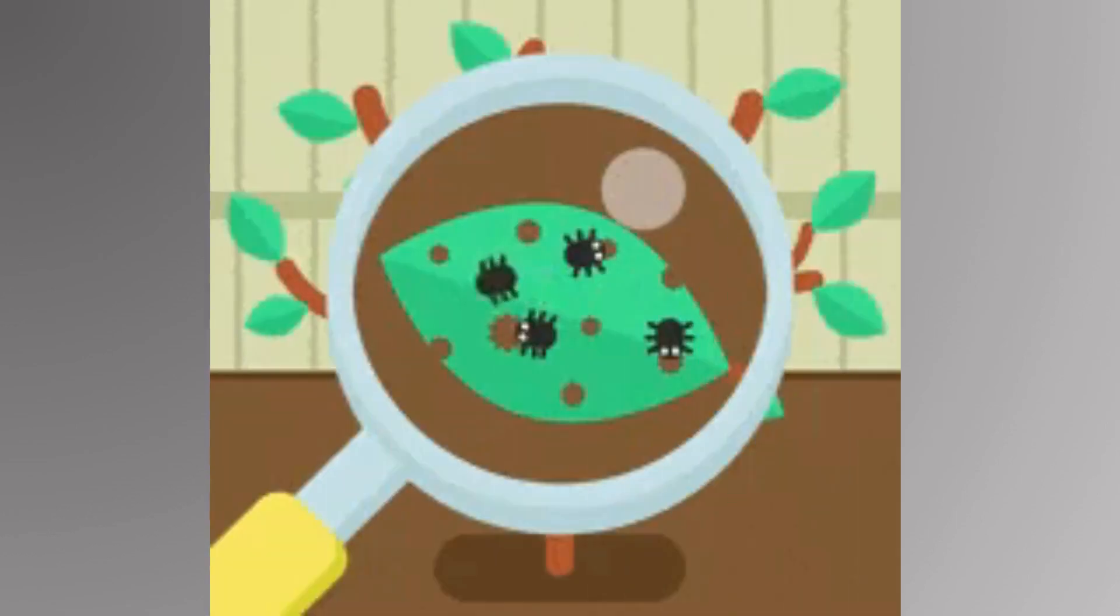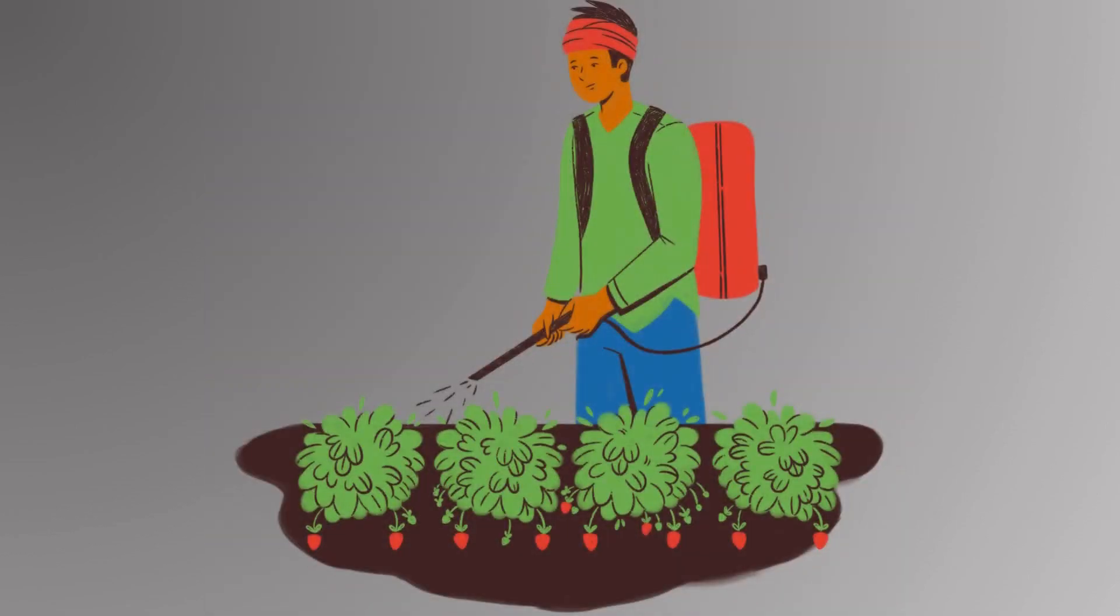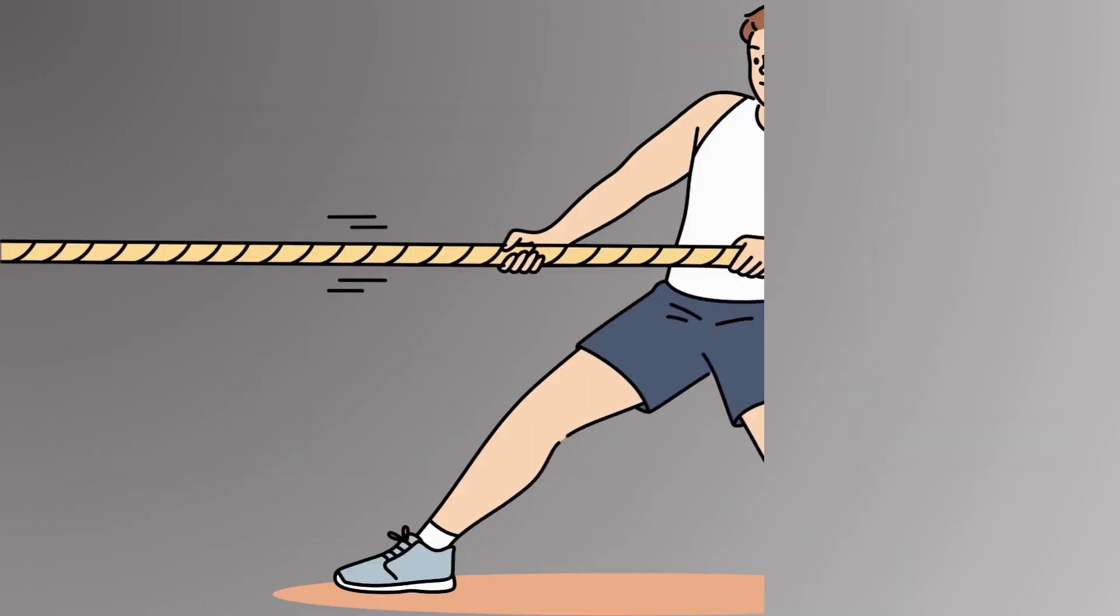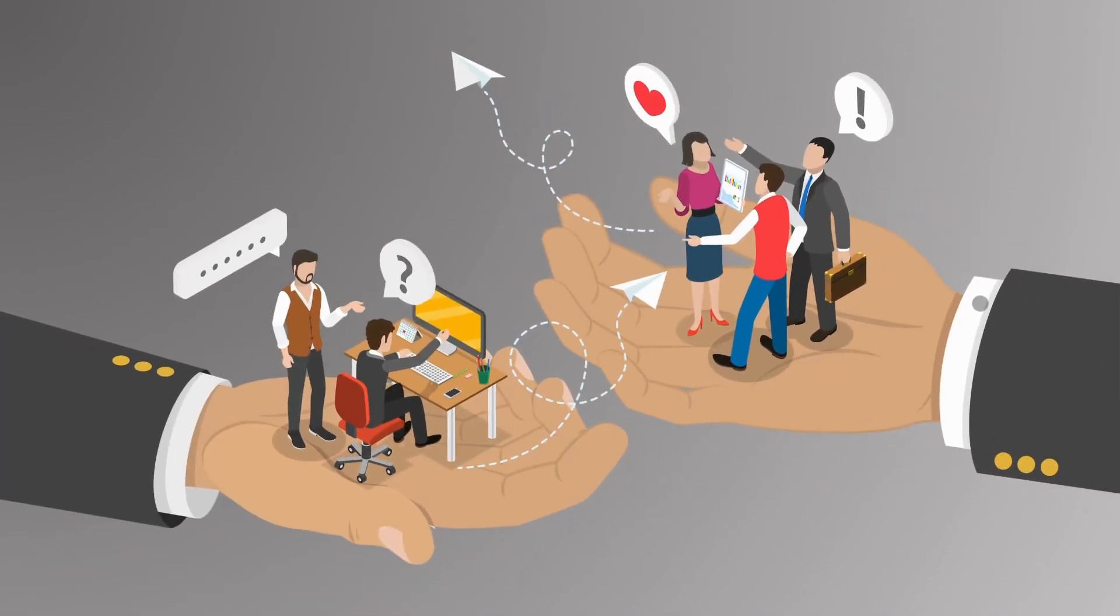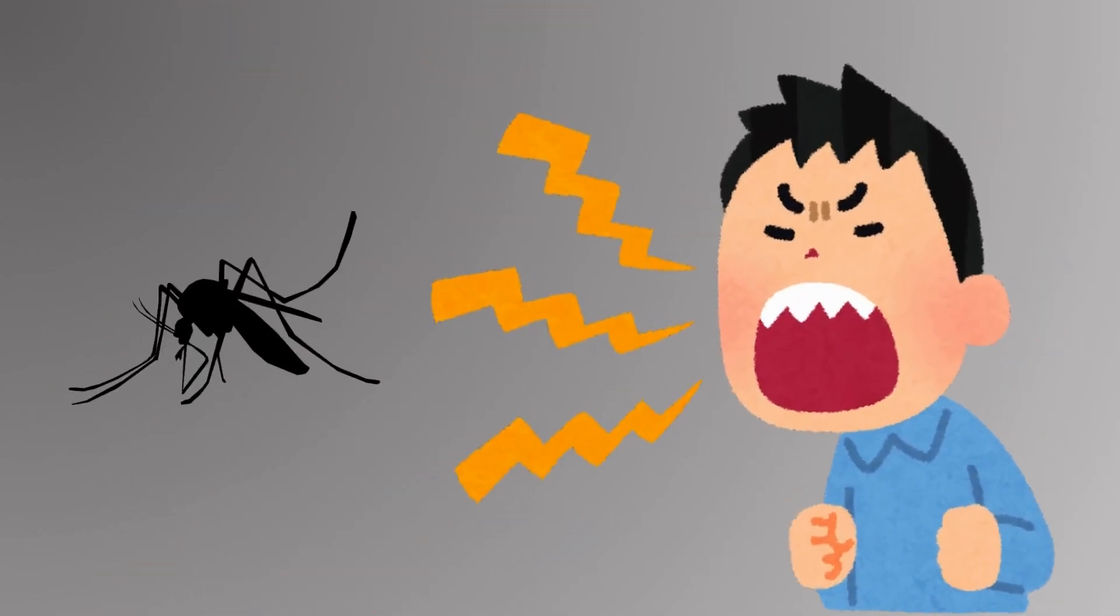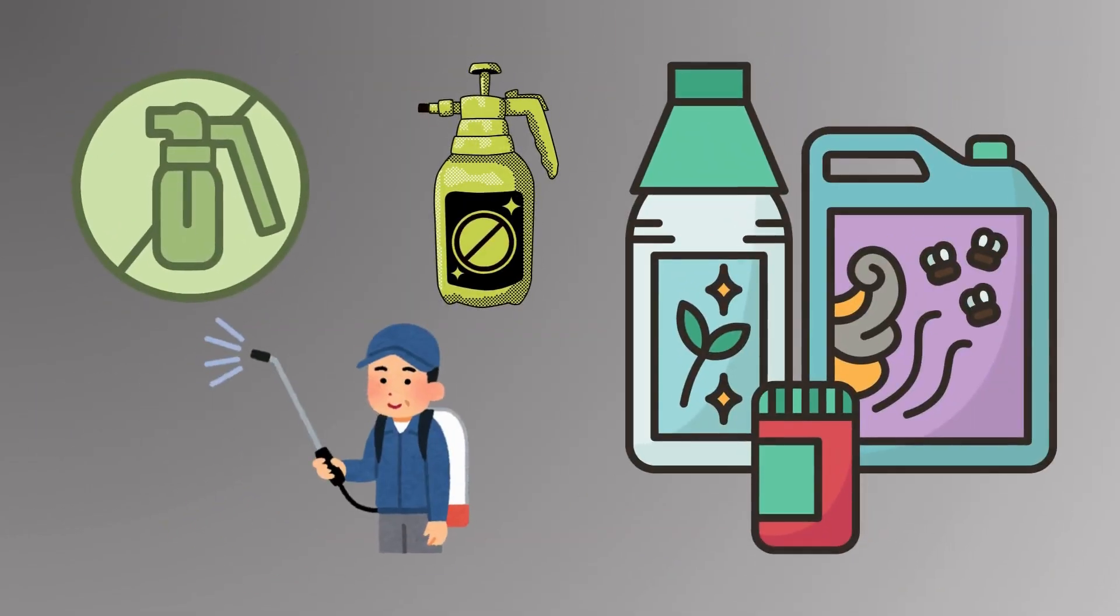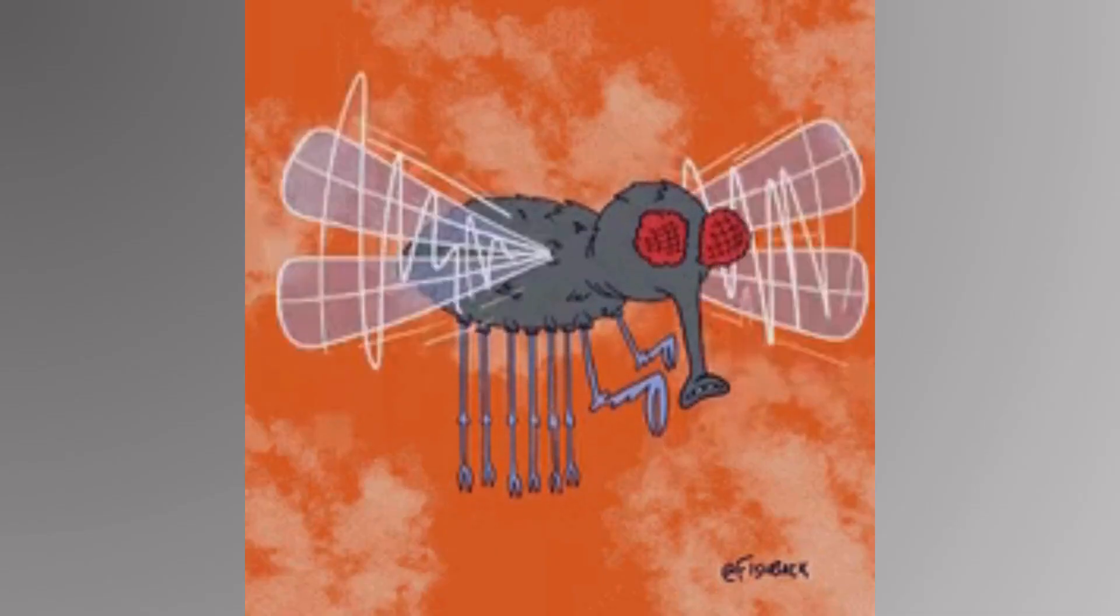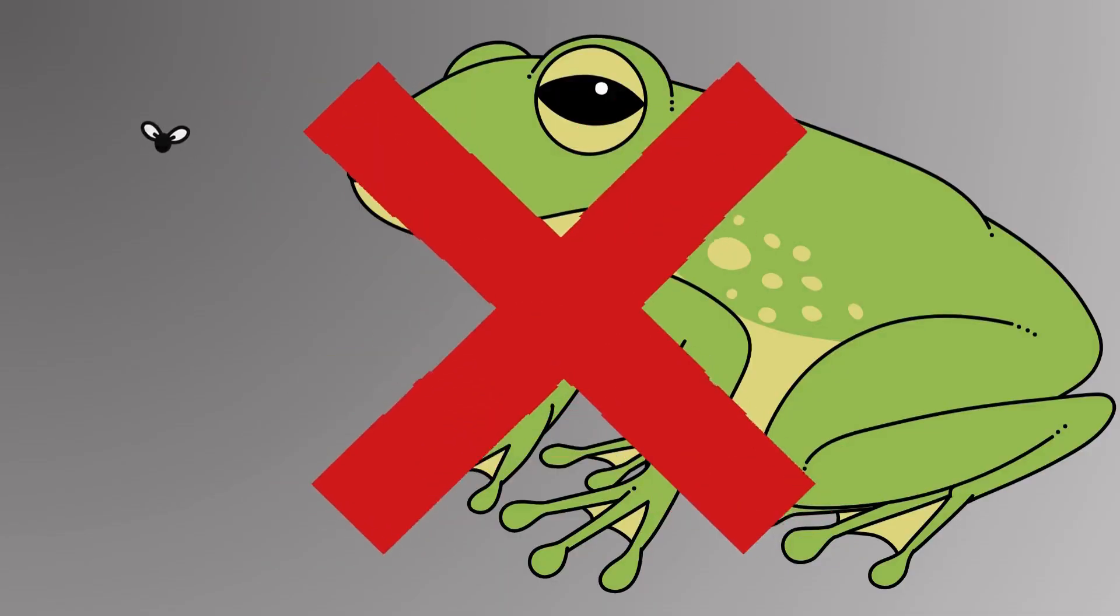Pesticide use: Bugs exposed to excessive pesticides may evolve resistance over generations, creating superbugs that adapt to survive despite human attempts to eradicate them. Overuse of pesticides can also disturb the food chain, causing swarms of pests when natural predators are eliminated.